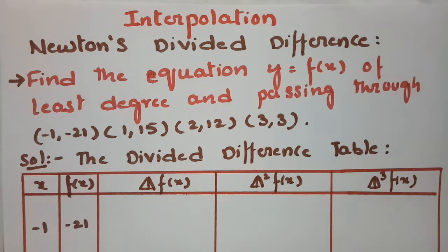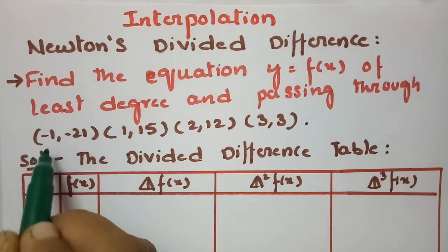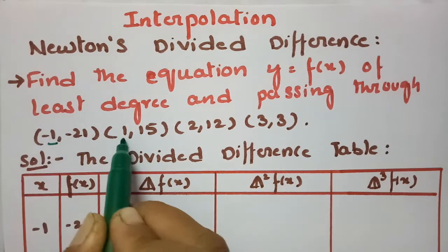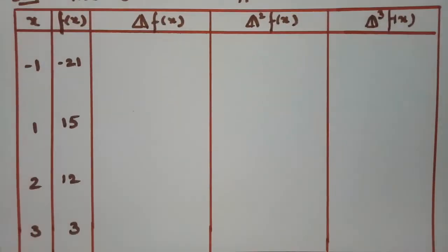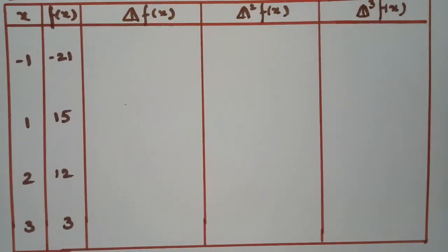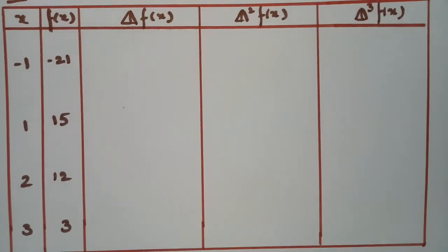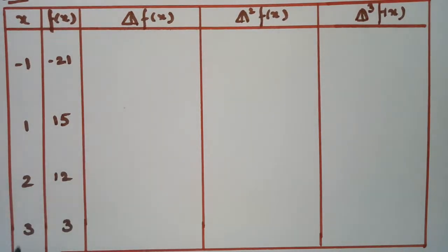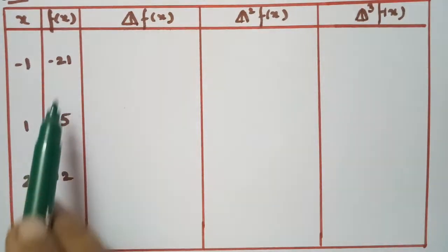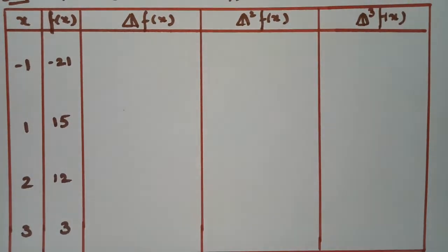First of all, we have to make the difference table. According to Newton divided difference, this is the table. The x values are -1, 1, 2, and 3, and the corresponding y values are -21, 15, 12, and 3.